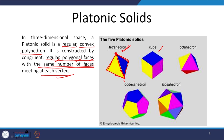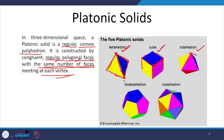At each vertex of the next platonic solid, we have 3 square faces meeting. An octahedron is formed by equilateral triangles — there are 8 equilateral triangles and at each vertex 4 equilateral triangles meet.